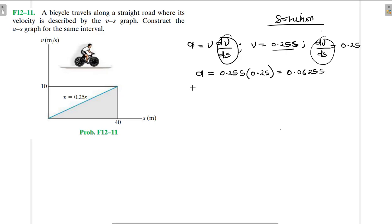Let's now find the value of acceleration at s is equal to 40 meters. So a of 40 is going to be equal to 0.0625 times 40, which gives us 2.5.